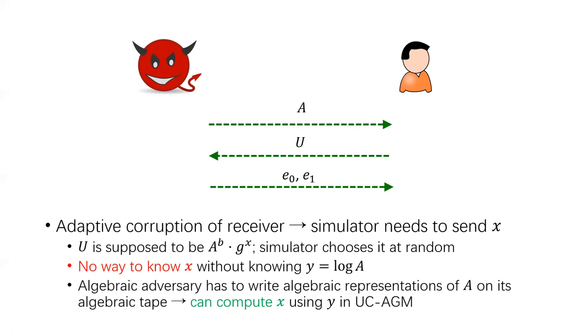But in the AGM, this issue can be trivially resolved because an algebraic adversary must write this Y on its algebraic tape, since Y is how the group element A is computed. Therefore, this Y can be seen by the simulator, and then the simulator can compute X accordingly. In this way, we can bypass the problem and manage to prove the UC security of Chou and Orlandi OT protocol.